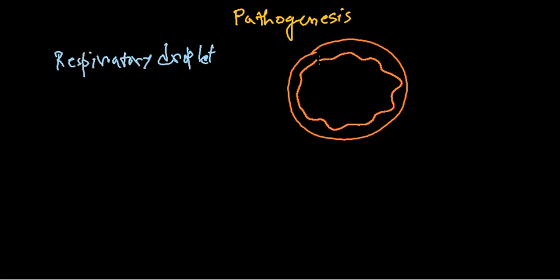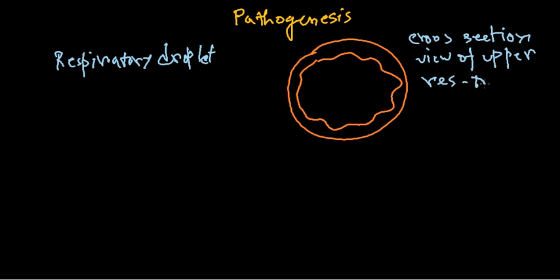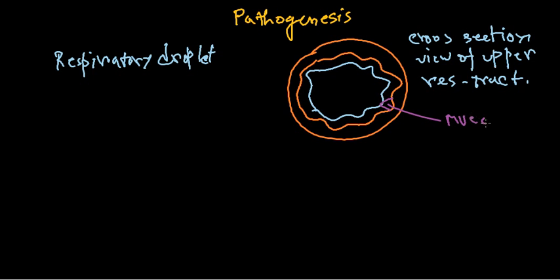Let's draw a cross-section view of the upper respiratory tract. In this cross-section we have the mucosal layer — the upper respiratory tract mucosa. This region contains the cells; the upper respiratory tract cells and tissue are present there.